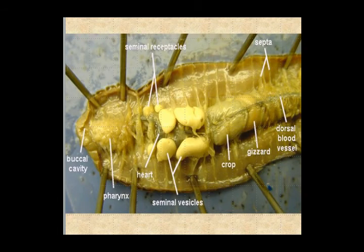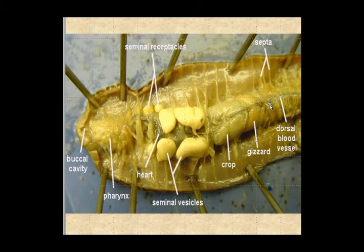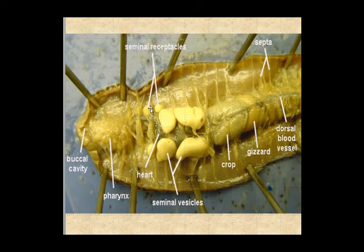Since we can't do an actual dissection, here is a labeled picture of a dissection. There's the buccal cavity, or mouth. The first little compartment is the crop; the second is the gizzard. The crop is usually soft; the gizzard is full of soil and sand that helps grind stuff up. There's an important dorsal blood vessel on top of the organism. You can see seminal vesicles and seminal receptacles. Sperm is released from the seminal vesicle and stored in the seminal receptacle of the other worm, so each worm both sends and receives sperm to fertilize each other's eggs.